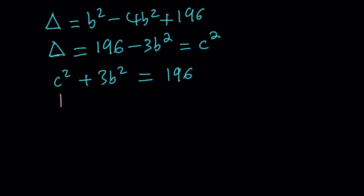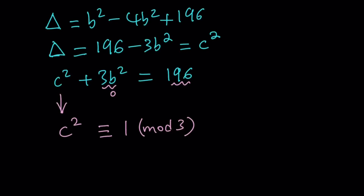If we look at the remainder upon division by 3, c squared stays as c squared, 3b squared is 0 mod 3, and 196 is 1 mod 3. So we get c squared is congruent to 1 mod 3. Why mod 3? Because having 3 as a coefficient makes one of the variables disappear, which is very helpful.